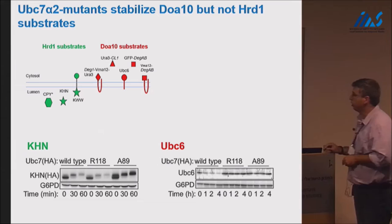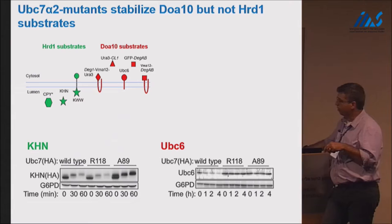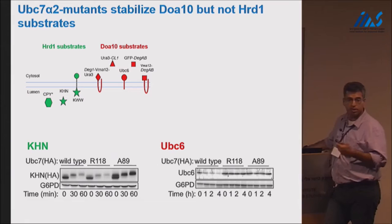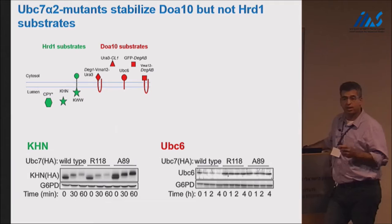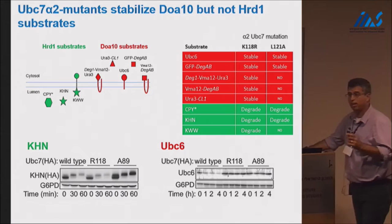Testing this in vivo with a battery of HRD1 and DOA10 substrates, we see that the alpha2 helix mutation of UBC7 has no effect on HRD1 substrates — the active site mutant of UBC7 still abolishes their degradation — but for DOA10 substrates such as UBC6, degradation is abolished by the mutation. This clear difference between DOA10 and HRD1 pathways was consistent across all substrates tested: the mutation only affects DOA10 substrates but not HRD1 substrates.